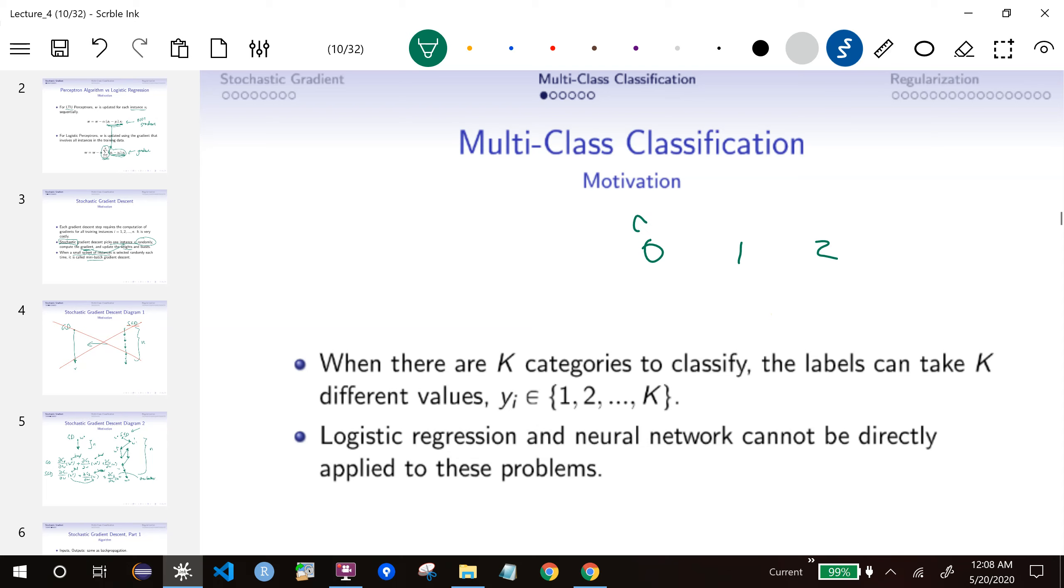Suppose we have images of cats and dogs, and let's add dragons. And we want to classify them. Maybe you think one easy thing to do is, because our a is between 0 and 1, maybe we can do a is just 2 times g of z, and now it's between 0 and 2.